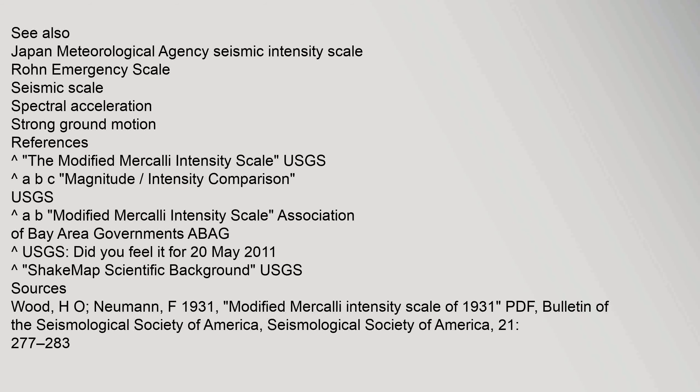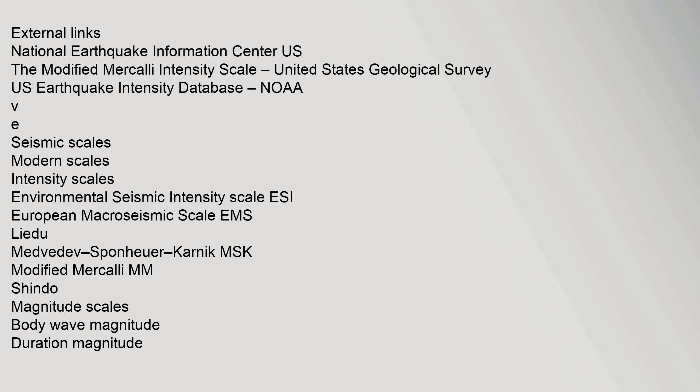See also: Japan Meteorological Agency Seismic Intensity Scale, ERON Emergency Scale, Seismic Scale, Spectral Acceleration, Strong Ground Motion. References and external links include the Modified Mercalli Intensity Scale from the National Earthquake Information Center, the United States Geological Survey Earthquake Intensity Database (NOAA), and related seismic scales such as the Environmental Seismic Intensity Scale (ESI), European Macroseismic Scale, Medvedev-Sponheuer-Karnik (MSK), Modified Mercalli, Shindo, and magnitude scales including Body Wave, Duration, Local (Richter), Moment, and Surface Wave magnitudes.